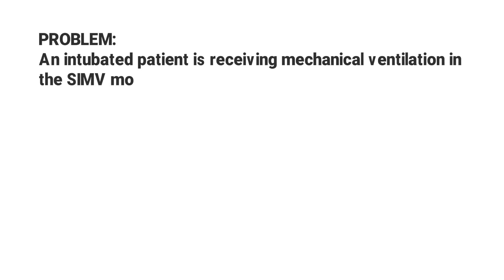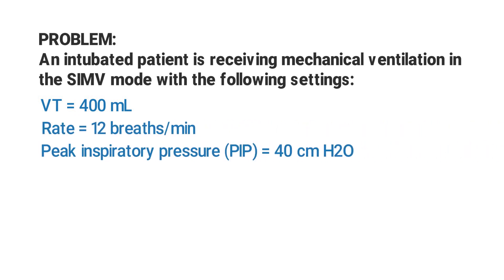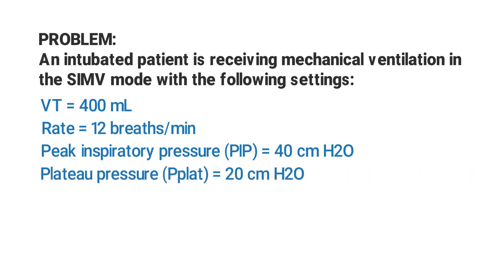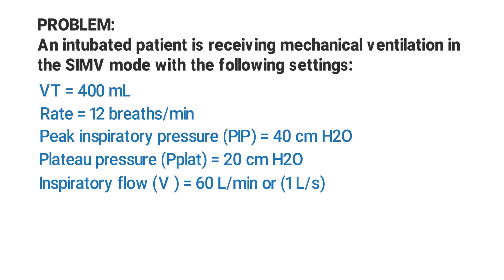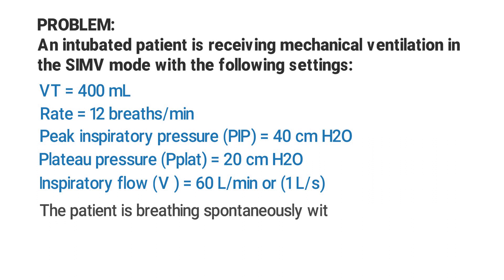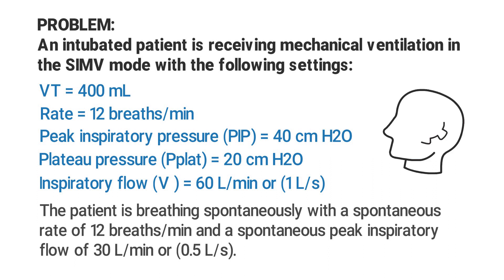So let's say we have an intubated patient receiving mechanical ventilation in the SIMV mode with the following settings: a tidal volume of 400 milliliters, a rate of 12 breaths per minute, a peak inspiratory pressure of 40, a plateau pressure of 20, and a set inspiratory flow of 60 liters per minute, which can be converted to 1 liter per second. The patient is breathing spontaneously with a spontaneous rate of 12 breaths per minute and a spontaneous peak inspiratory flow of 30 liters per minute, which can be converted to 0.5 liters per second.